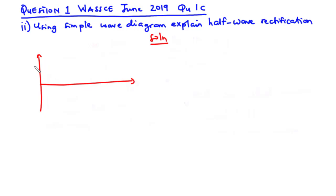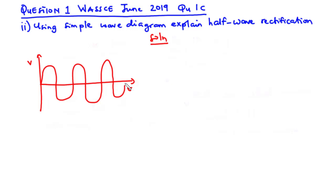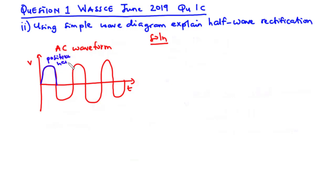For an AC waveform, you can either have a voltage vs time graph or a current vs time graph. In this video we are going to use a voltage vs time graph. This is how an AC waveform looks like. We call this the positive half cycle.